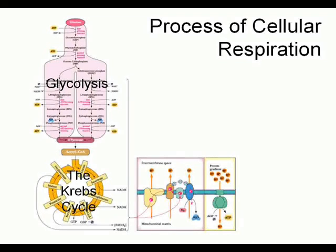Glycolysis and the Krebs cycle produce a few ATP. The last step, which is the electron transport chain, is where the majority of ATP is formed. It does this by producing a chemical gradient with products from glycolysis and the Krebs cycle to power enzymes that synthesize ATP.